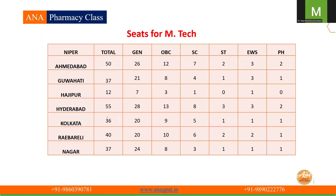Then seat distribution for MTech courses: at Ahmedabad, MTech medical devices, biotechnology, and all combined — 50 seats total with category-wise distribution. Then at Guwahati, 37 seats, and category-wise distribution. At Hajipur, very few seats — only 12 seats with category-wise distribution. Then at Hyderabad, 55 seats with category-wise distribution. At Kolkata, 36 total seats. At Raipur, 40 seats. And at SAS Nagar (Mohali), 37 seats.